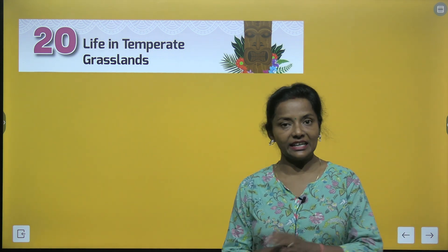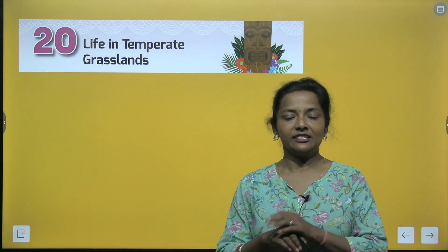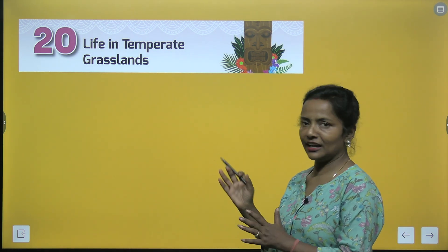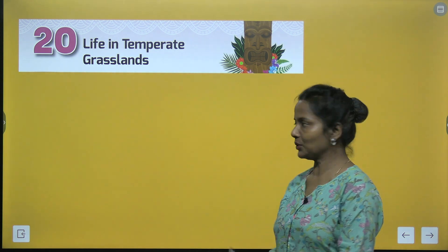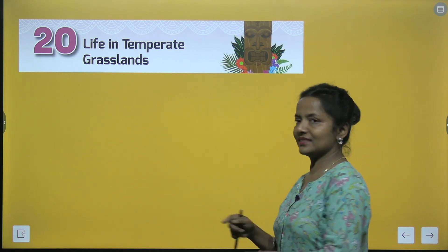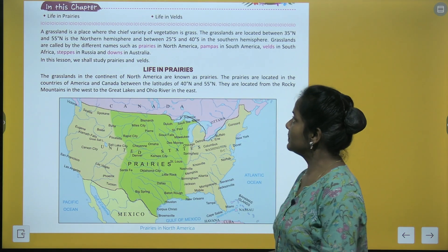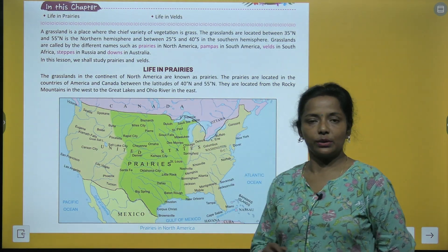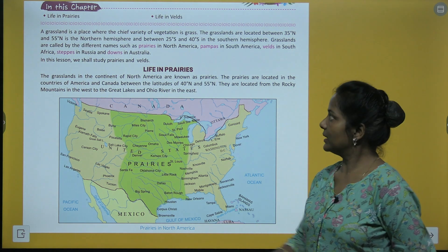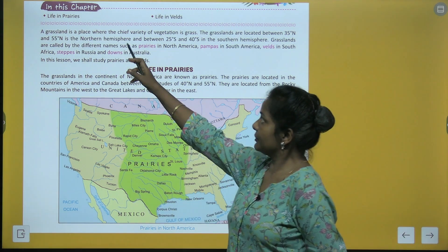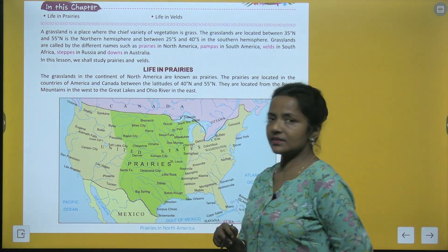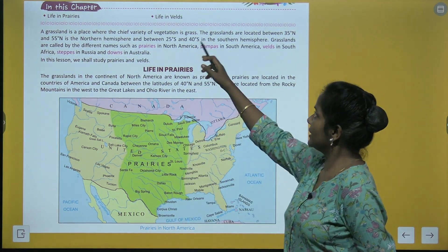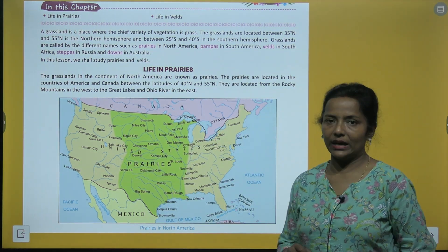Temperate grassland mein life. In this chapter we are going to read about life in prairies and life in velds.